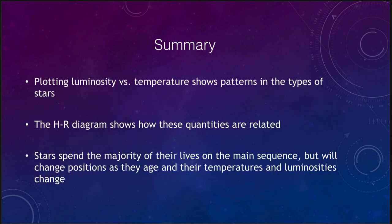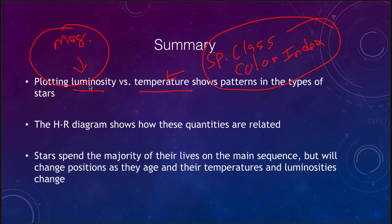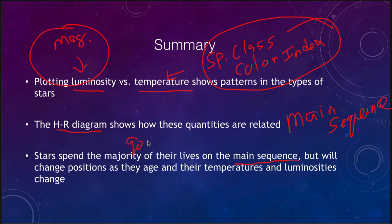In summary, an HR diagram is created by plotting luminosity — or a measure of it, such as magnitudes — versus temperature, which can be represented by spectral class or color index. Stars spend most of their lives on the main sequence, which is why 90% of visible stars are found there. But they will change their positions as they age when their temperatures and luminosities change, something we will explore in coming lectures.